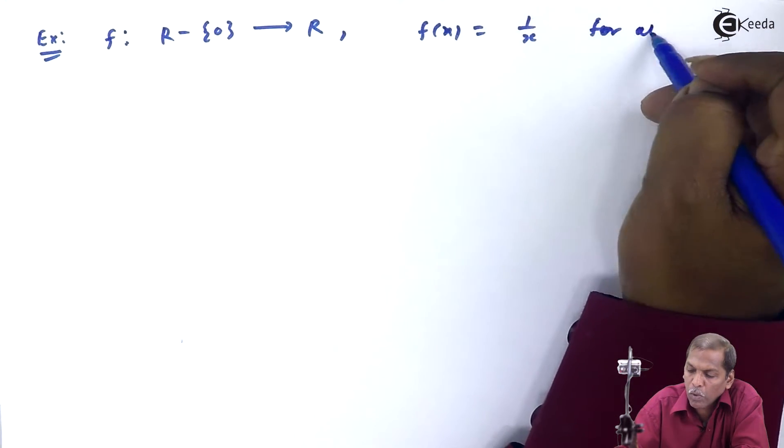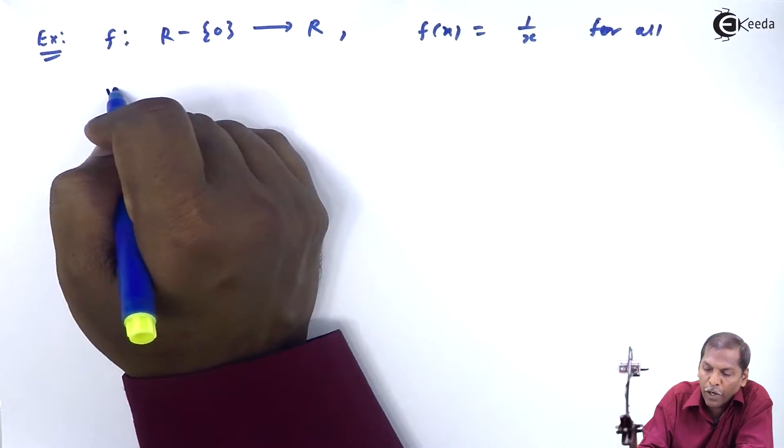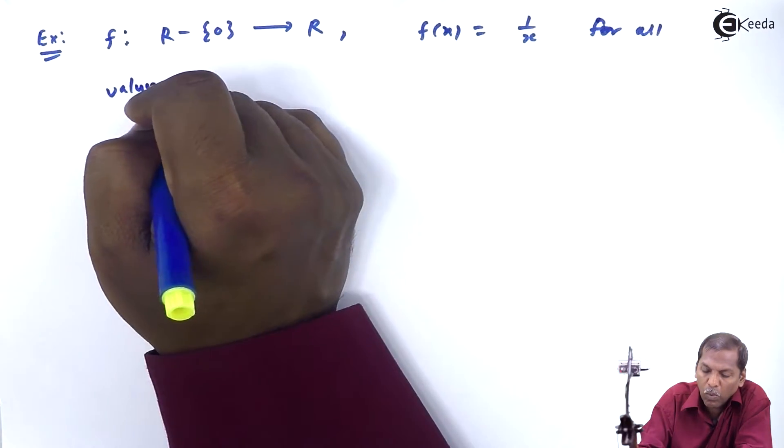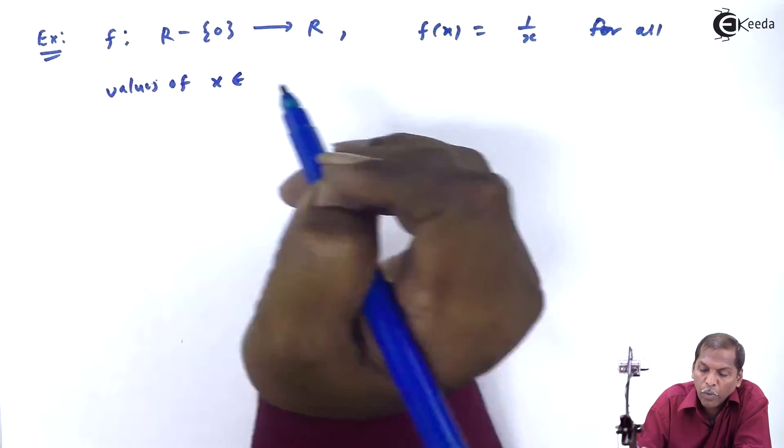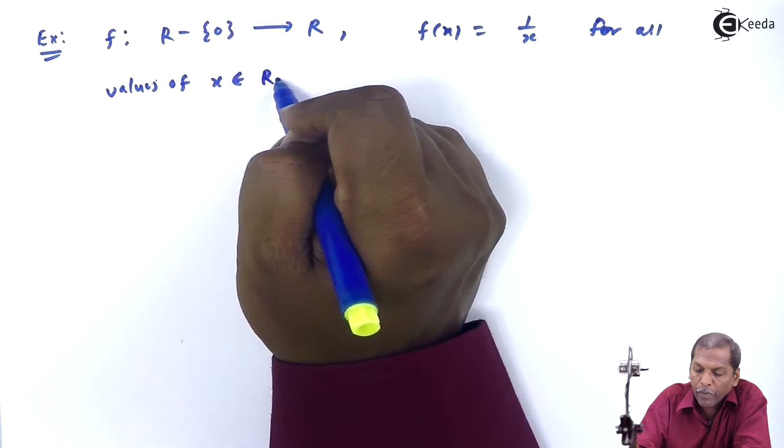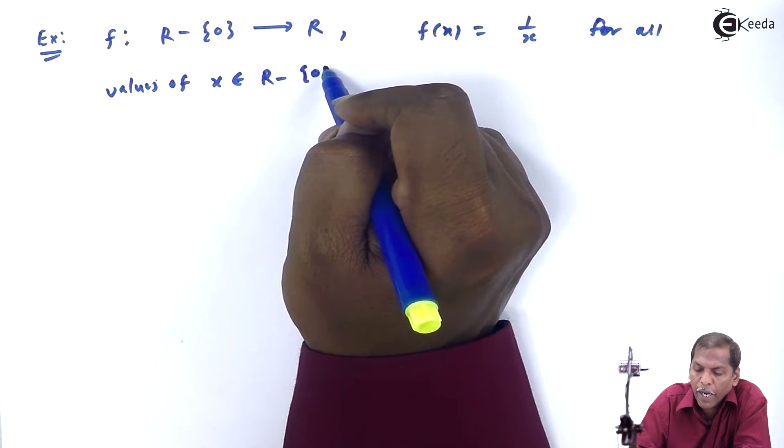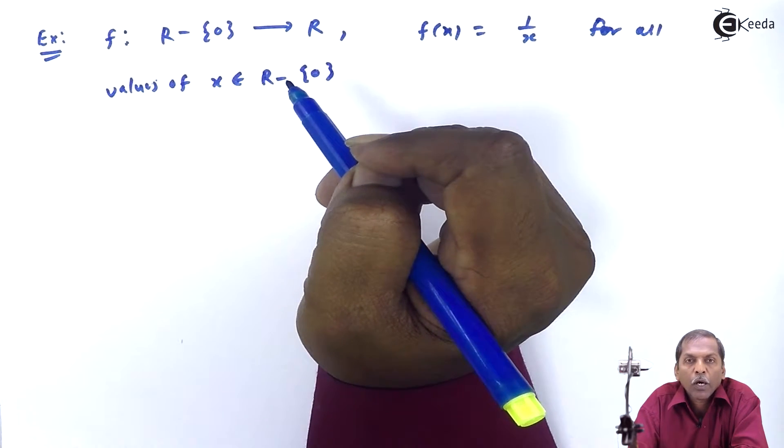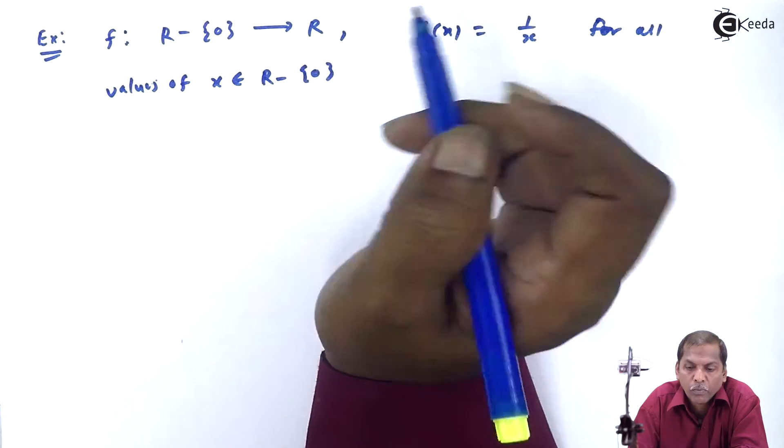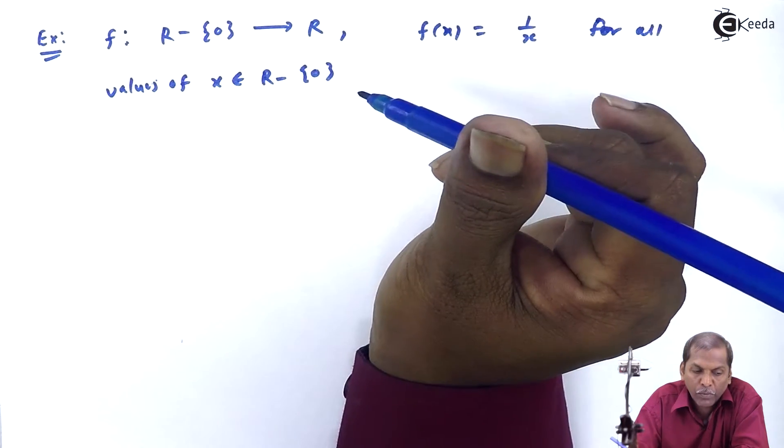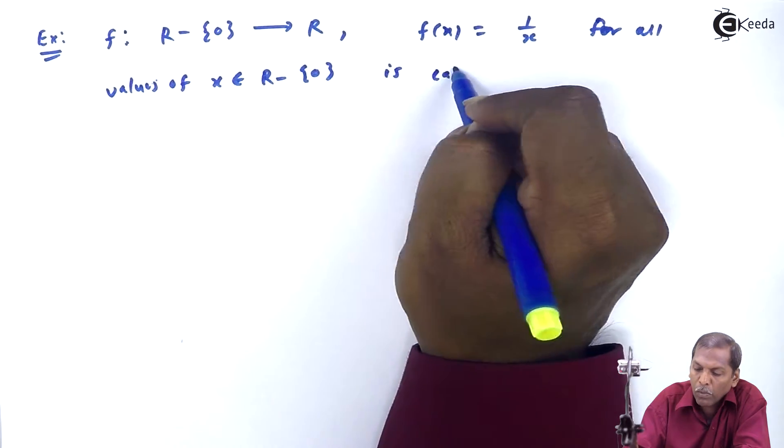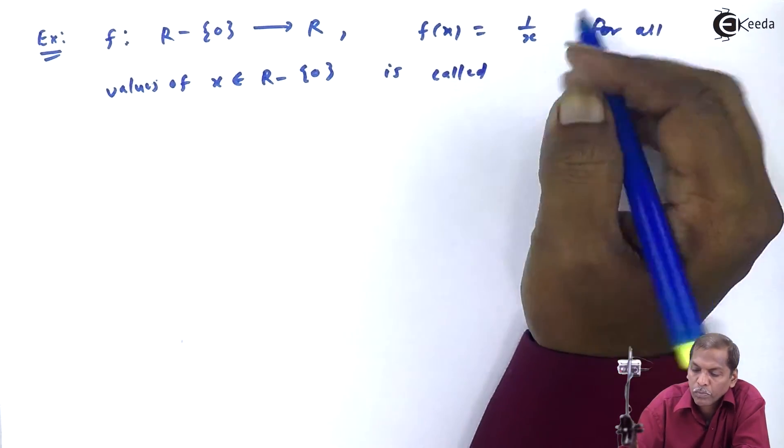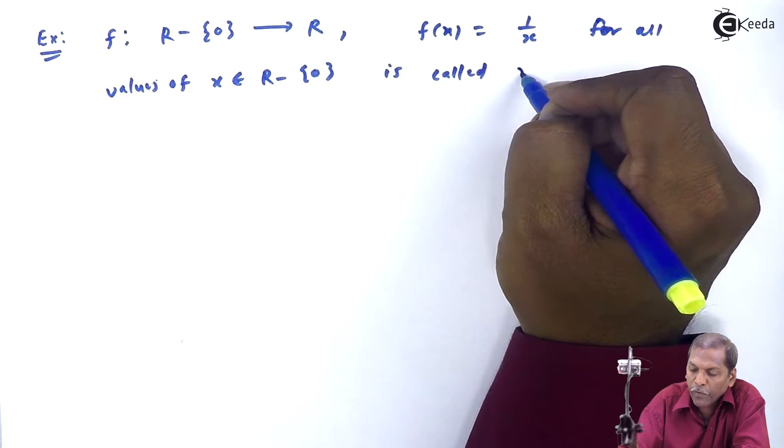for all values x belongs to domain R minus curly bracket 0. This function is called a rational function.